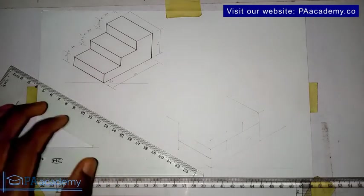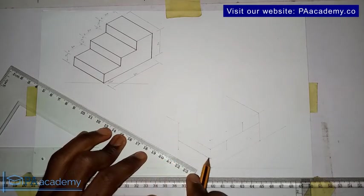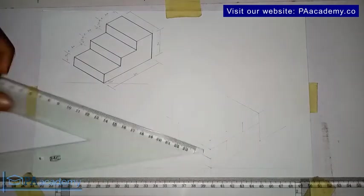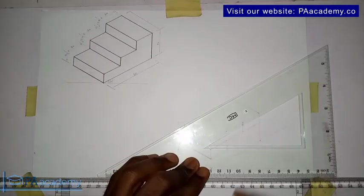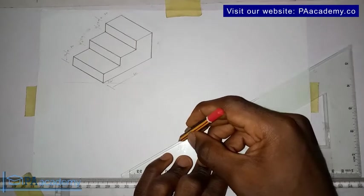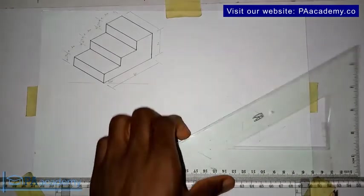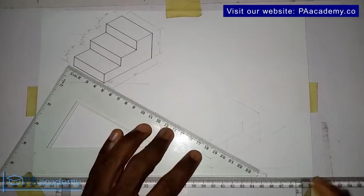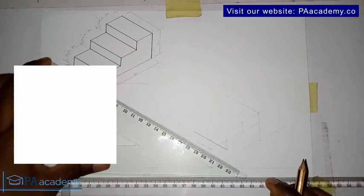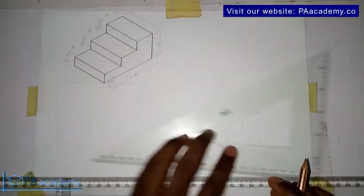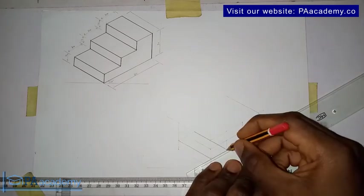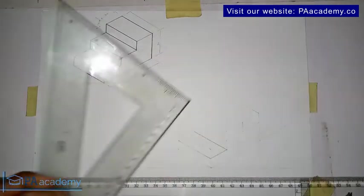Now I want to start working on the steps one after the other. We already have this line, so from this point here, this particular point represents the one here. What I want to do is I want to draw this line. So from here to here, that has given us our first step.